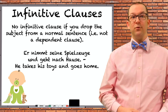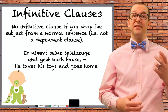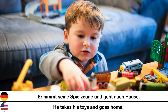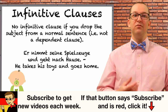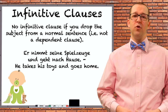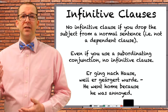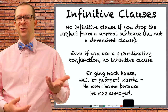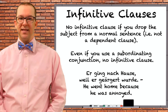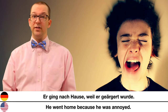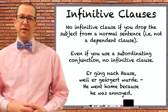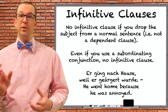This only works if the second clause is a dependent clause. If we drop the subject out of the second half of a normal sentence, this does not happen. For example, Er nimmt seine Spielzeuge und geht nach Hause — He takes his toys and goes home. He is the subject of both halves, but the conjunction 'und' doesn't trigger a dependent clause, so we keep the conjugated form 'geht'. Even if you use a subordinating conjunction, which triggers a subordinate clause, we still don't use 'zu' plus infinitive, as we keep the subject in the second half: Er ging nach Hause, weil er geärgert wurde — He went home because he was annoyed.